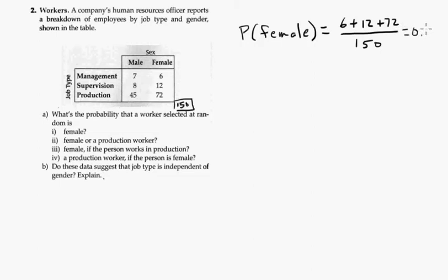So the first question is, what's the probability of female? Probability of female can be, just from the diagram, 6 plus 12 plus 72 divided by the total. And I believe the total is 150. So that should be about 60 percent, 0.6.